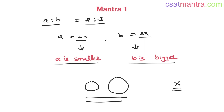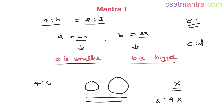You have to look at those options and eliminate the ones which don't satisfy this. If a particular option has 5 is to 4, you will eliminate it. If an option has 4 is to 6 — a is to b as 4 is to 6 — it may be our answer, but we need to check b is to c as well. You can also go for which is smaller and which is bigger to eliminate further options.